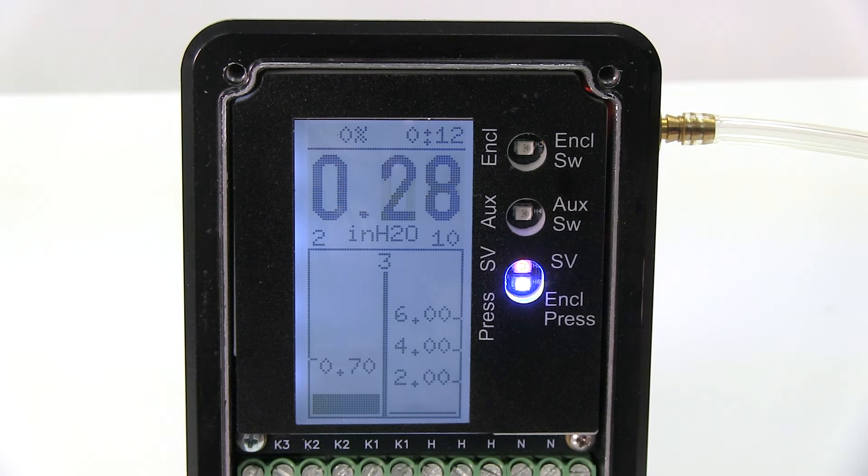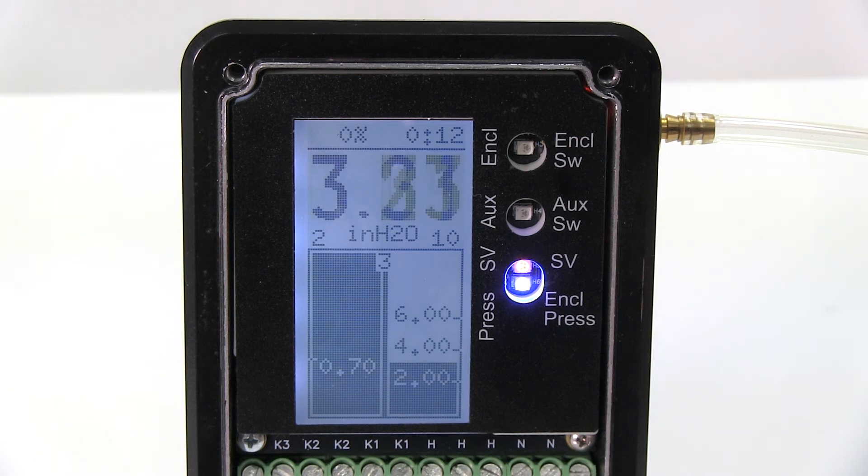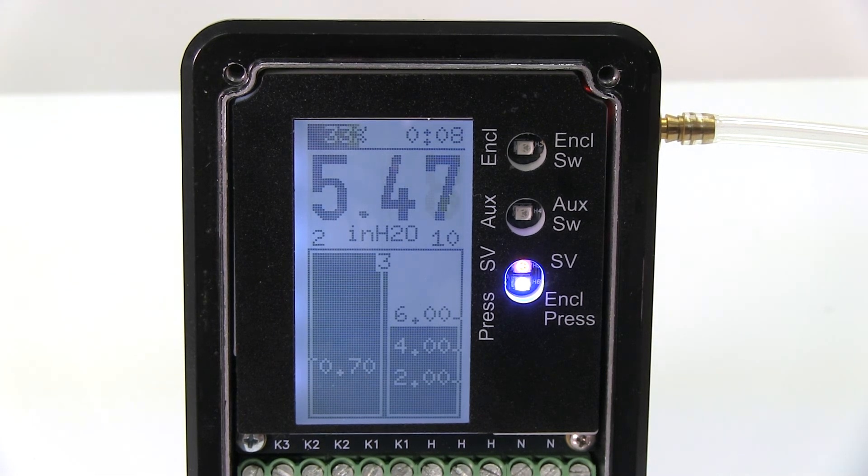So if I just get it back up to safe pressure, you can see my solenoid kicked on again, and it's trying to get back up to the purging pressure of four inches of water. And then the purge timer will start again.